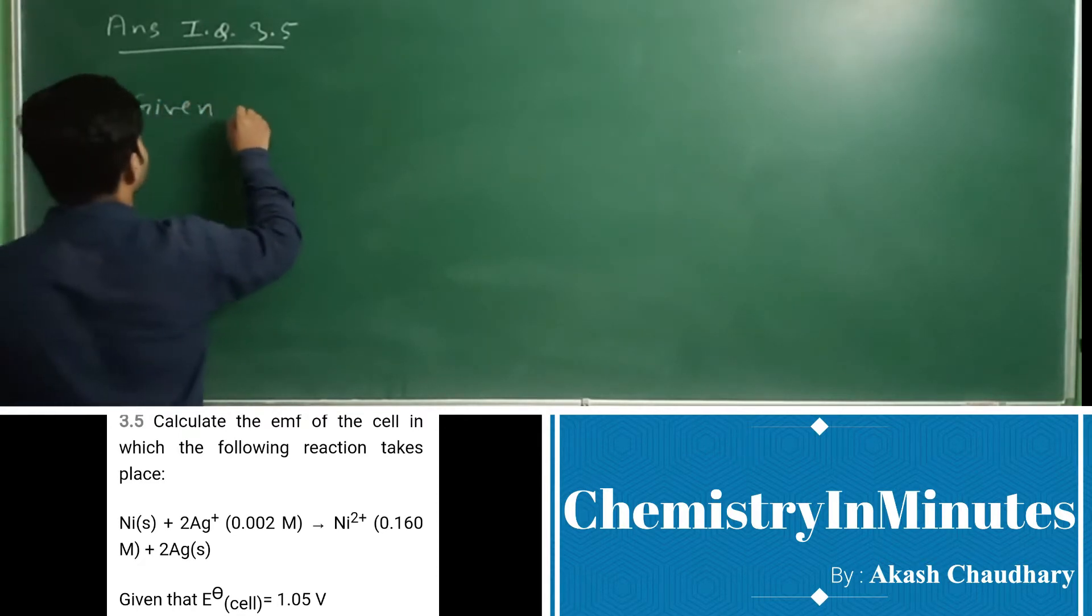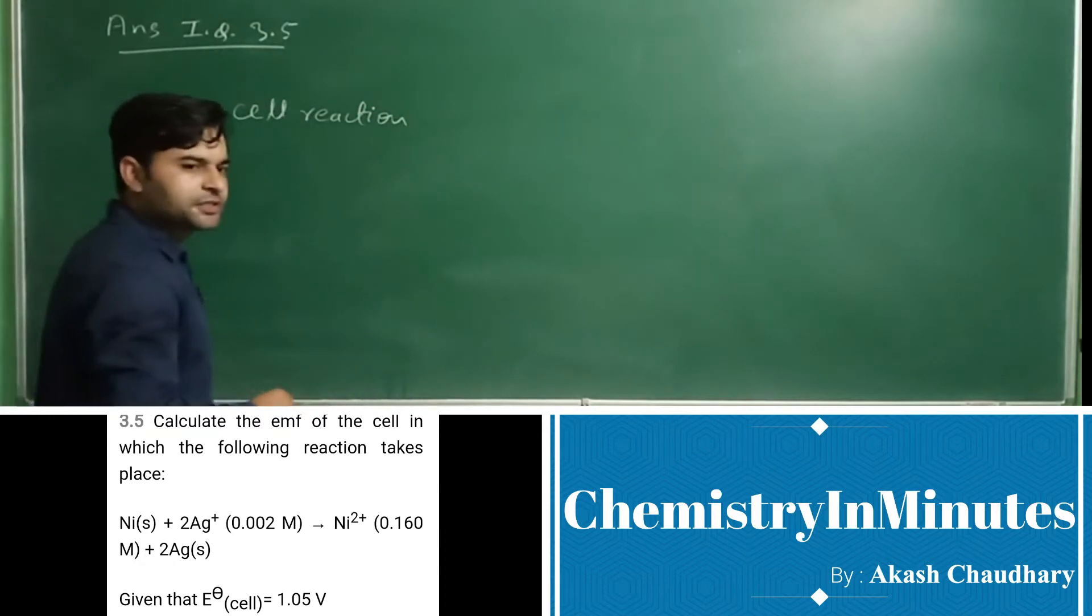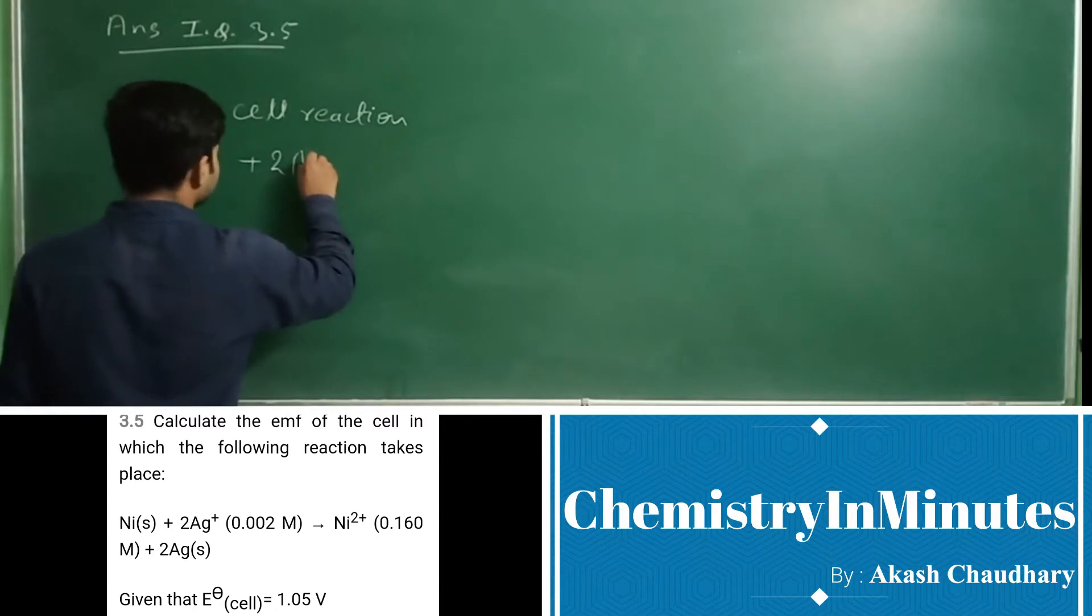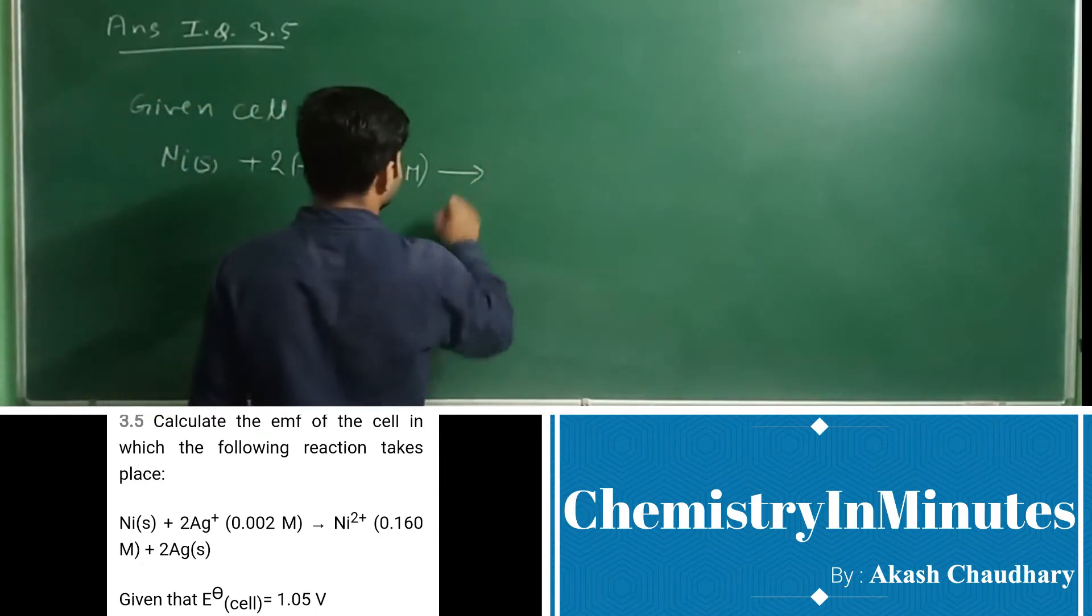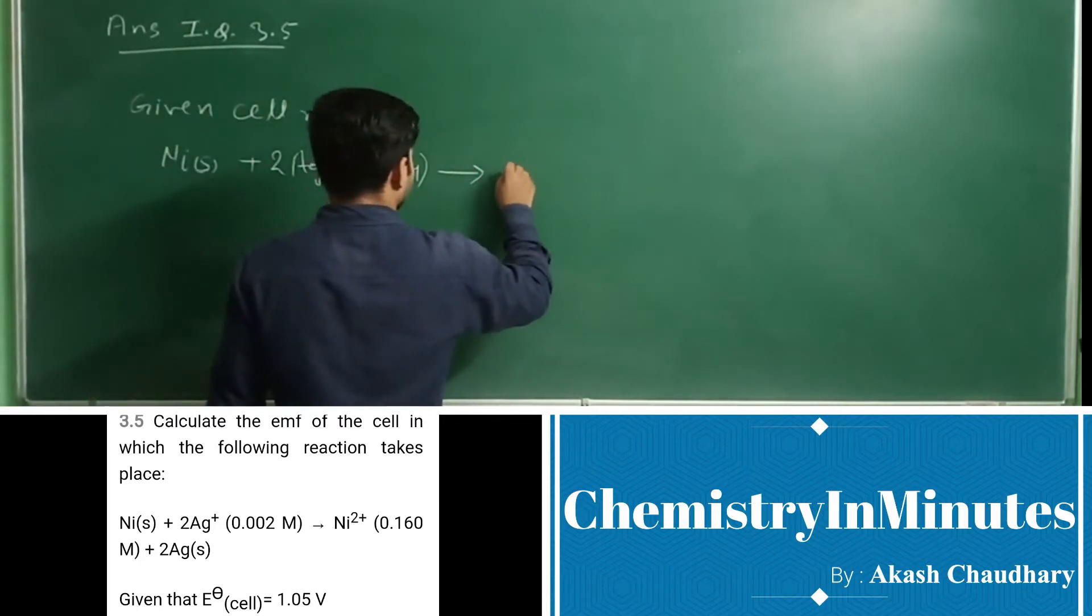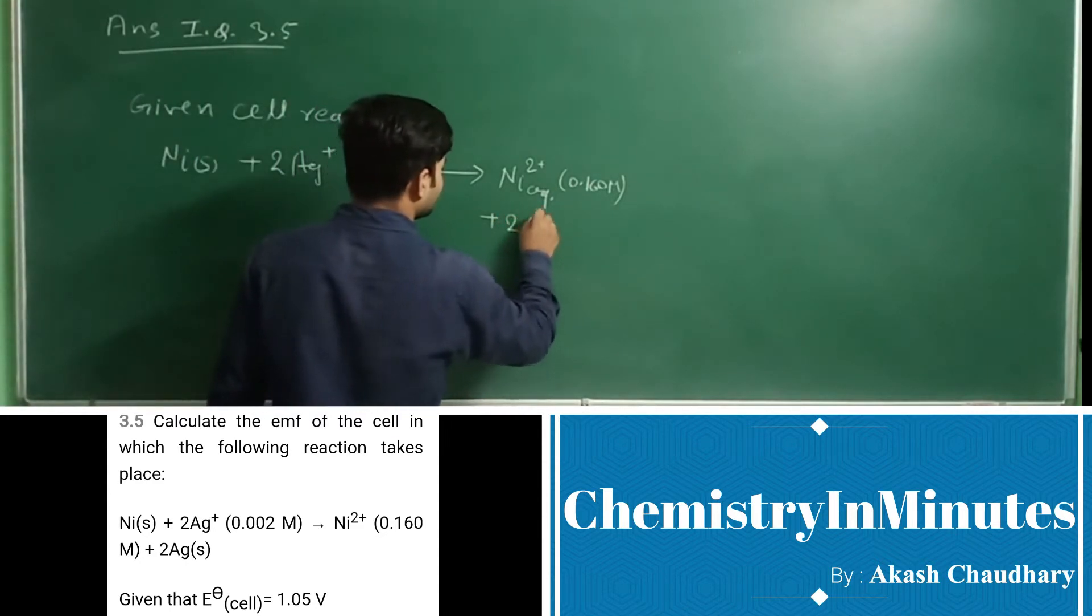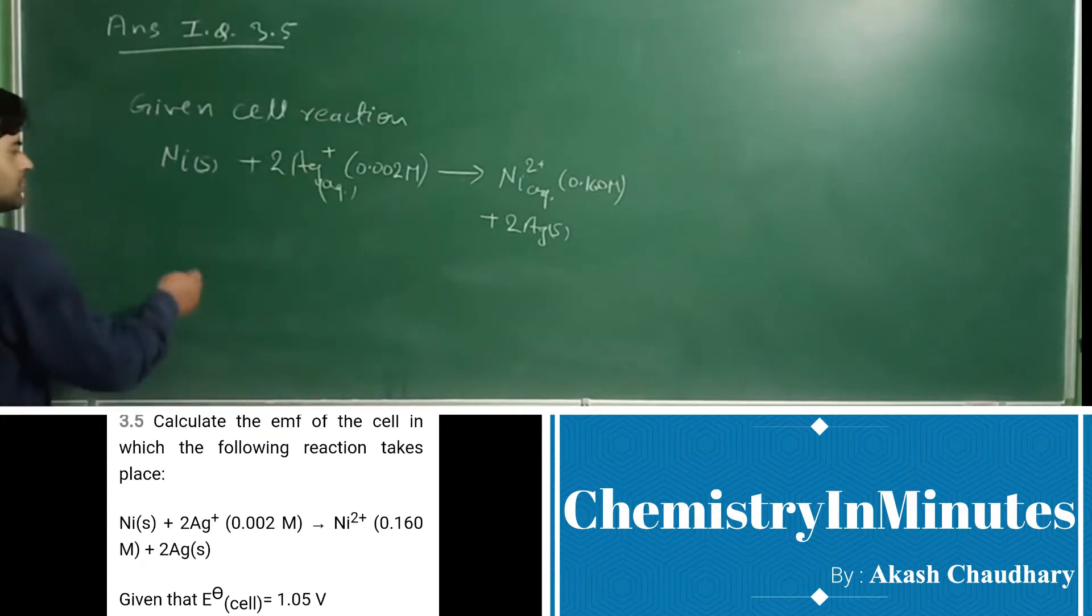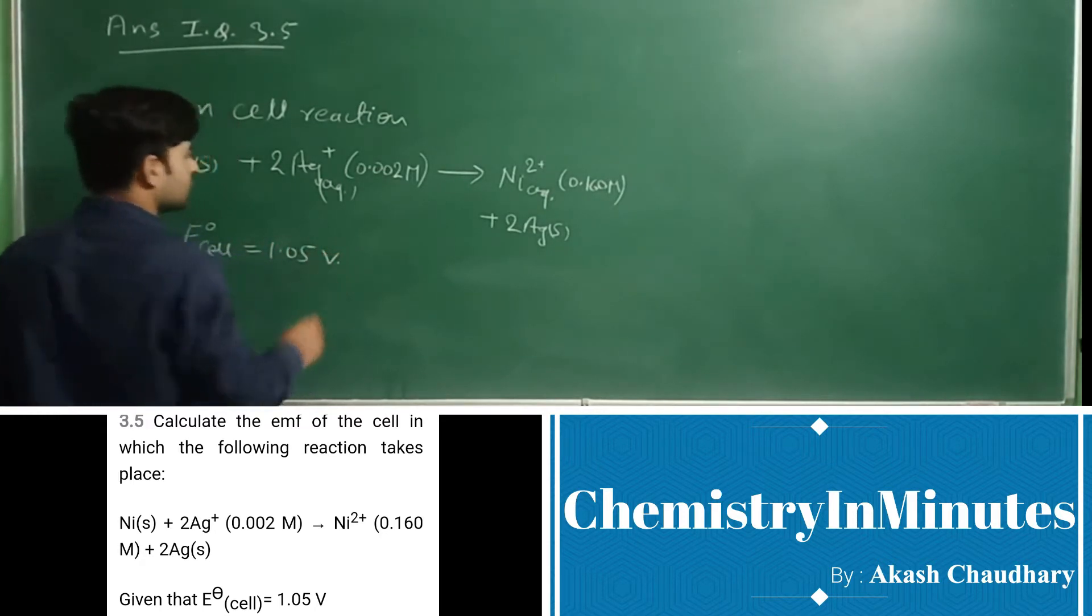Given cell reaction: Ni (solid) + 2Ag+ (0.002 M) → Ni²⁺ (0.160 M) + 2Ag (solid). E°cell = 1.05 V. This is the given data.